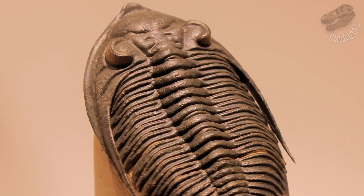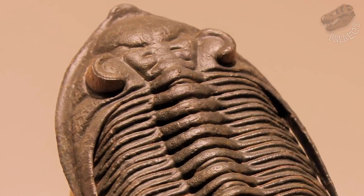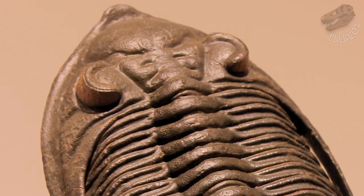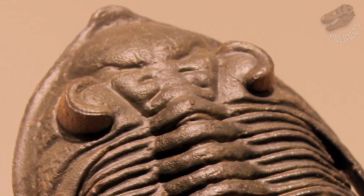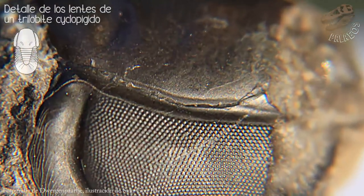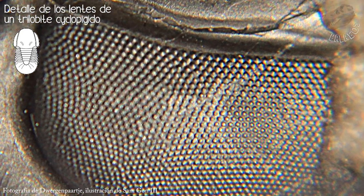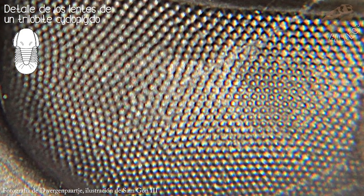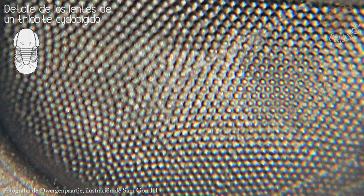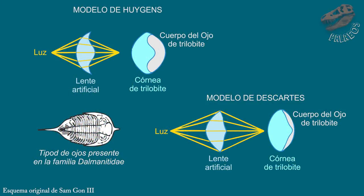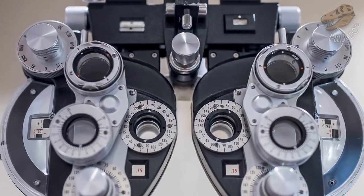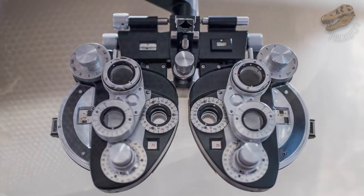Y los trilobites llevaron las cosas al extremo, pues la calcita no solo formaba parte de sus armaduras sino también de los ojos. Tenían literalmente ojos de piedra. Estos serían la envidia de Leeuwenhoek y otros diseñadores de lentes. Algunos cumplen con modelos diseñados por humanos para corregir deformaciones ópticas, como aquellos del modelo de Huygens o del modelo de Descartes. La naturaleza fue la oftalmóloga natural de estos pequeñines.